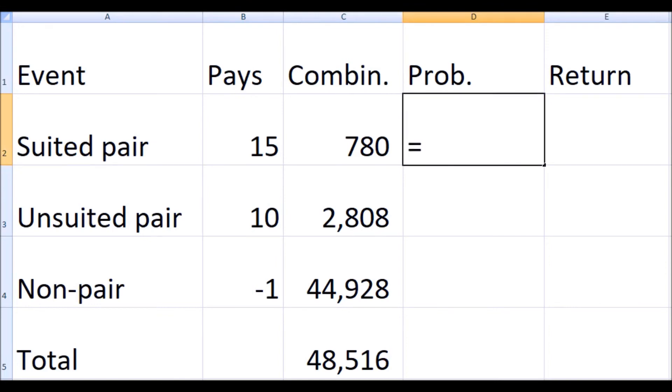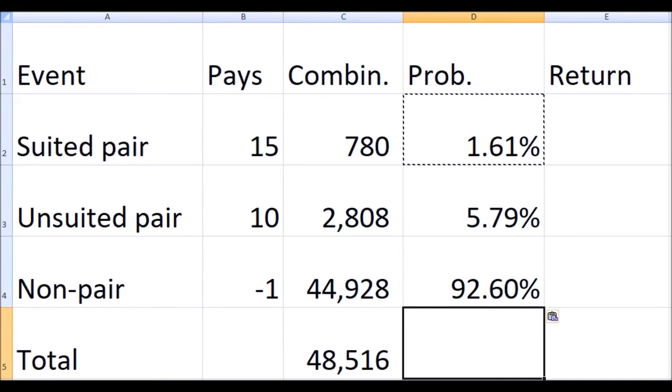So let's calculate the probability of each event, which is really simple. The probability of a suited pair is the number of ways to make a suited pair divided by the total number of ways you can choose two cards out of the 312 in the shoe, which is 48,516. So 780 divided by 48,516 comes to about 1.61 percent. Using that same formula of the number of combinations of each event divided by the total, we get these other probabilities: a 5.79 percent of an unsuited pair and a 92.6 percent of getting two different ranks.